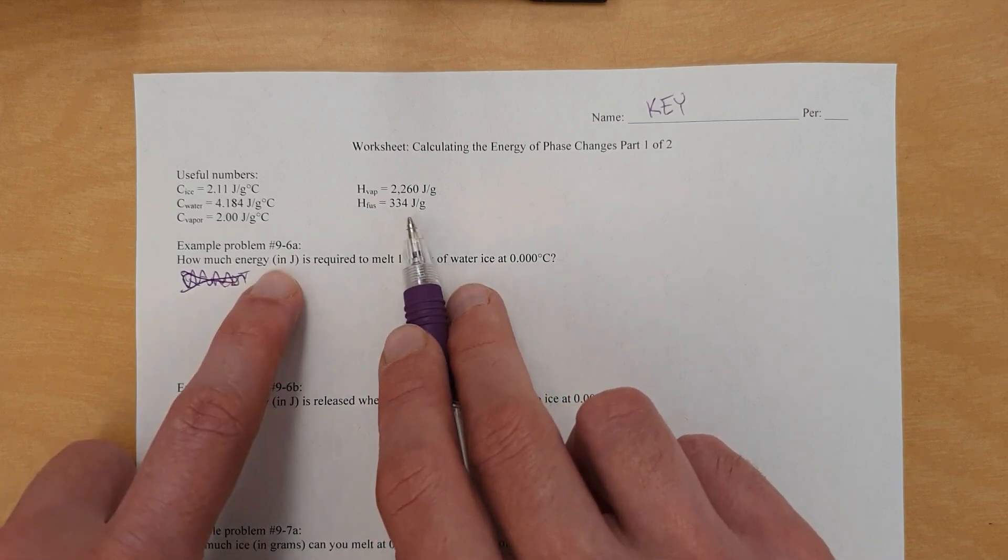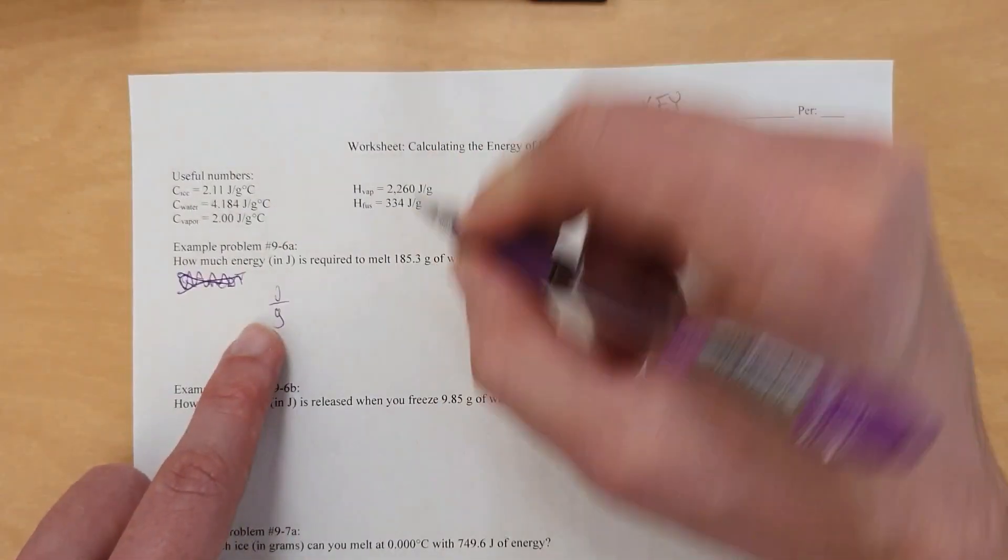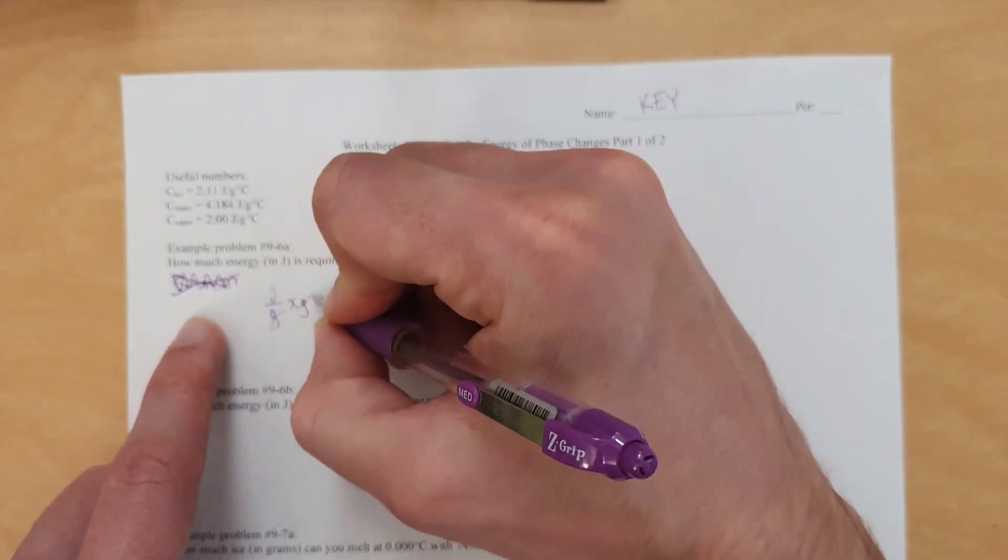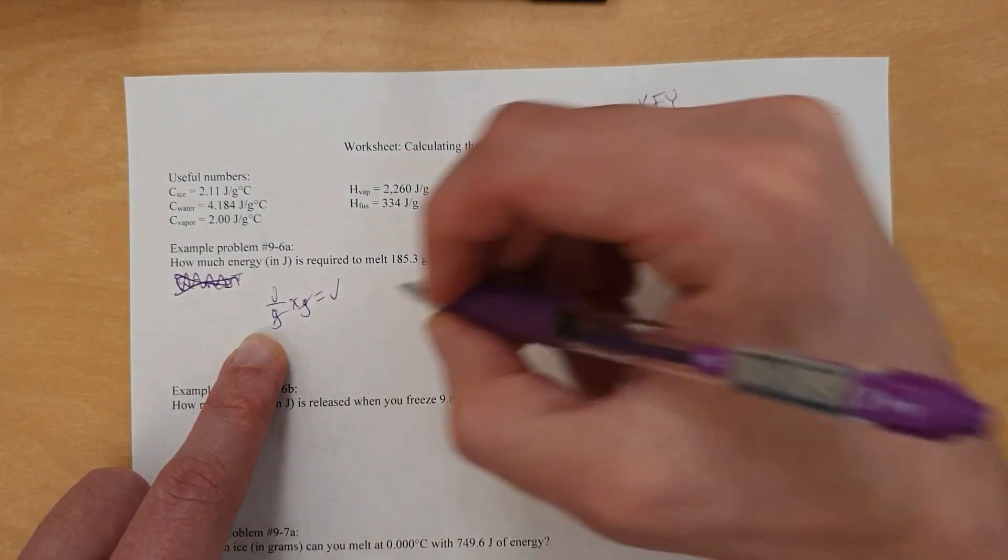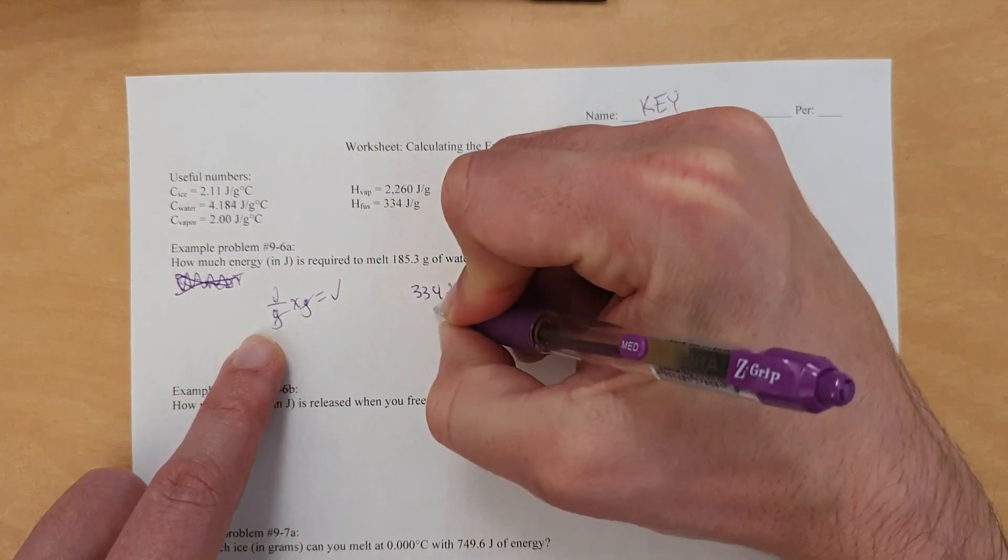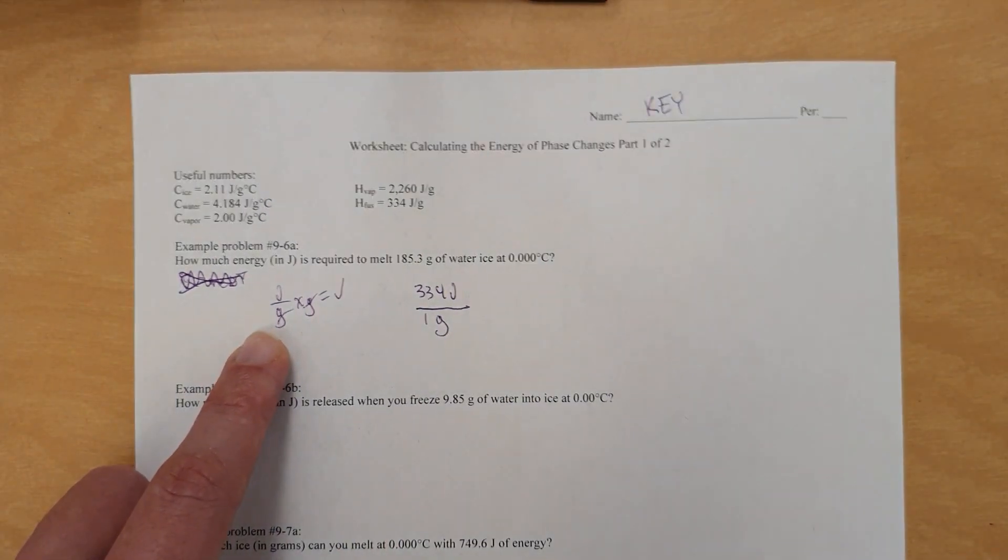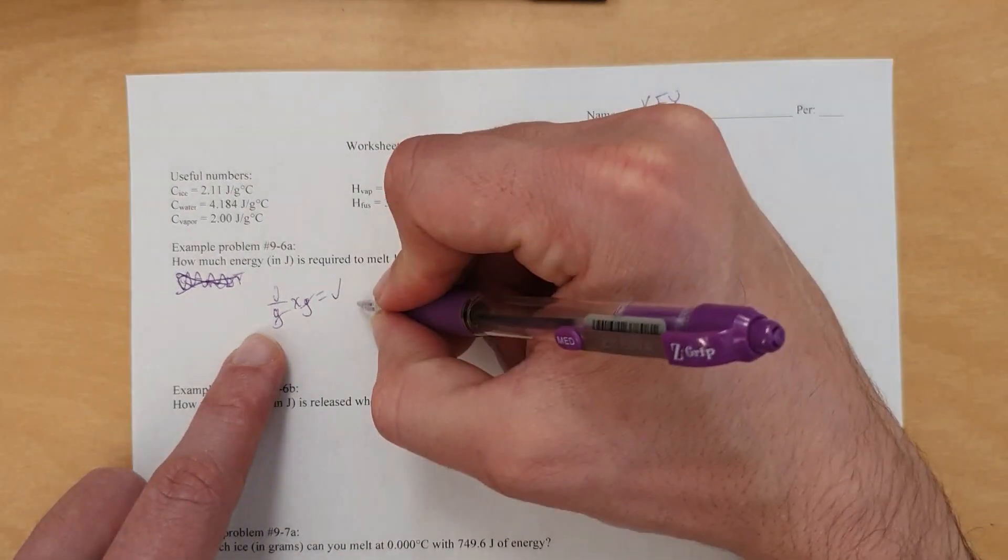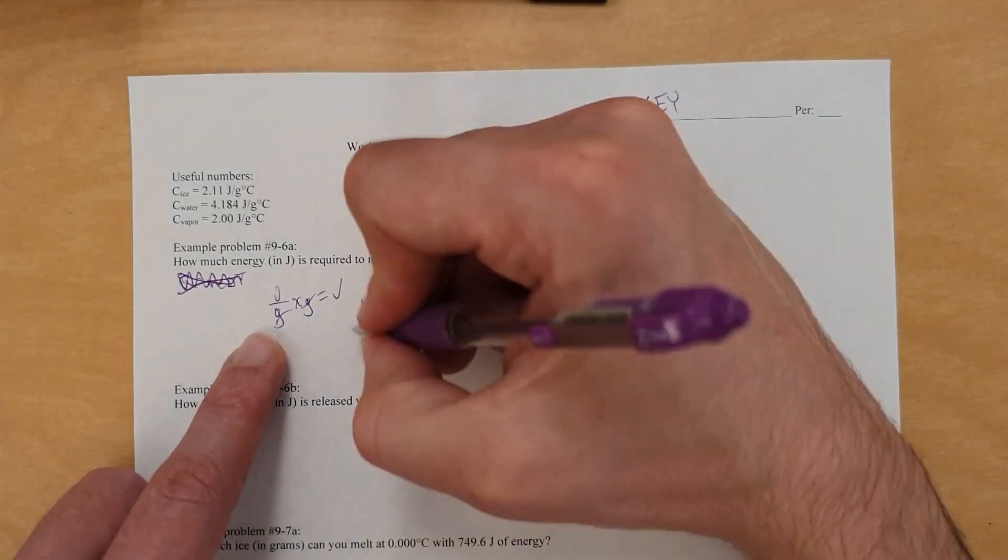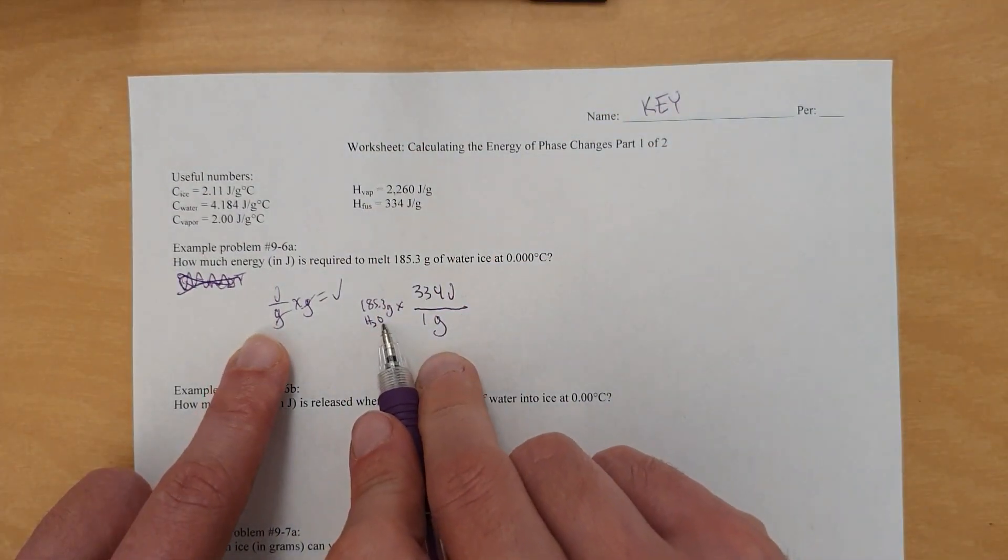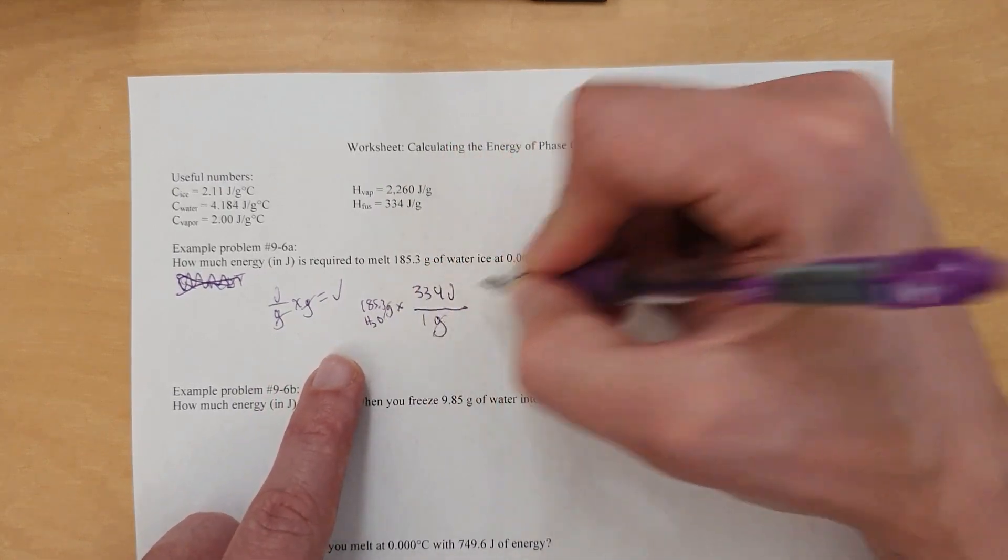Instead, what you want to do is look at, okay, it's ice, so you're going to be dealing with the heat of fusion. This is for when ice is melting or freezing. Use this 334. Notice it's joules and grams. So you're going to get an answer with joules. That's good. And grams. So you're going to have to take the joule per gram, and if you times it by gram, then gram will cancel gram to give you joules. That's good.